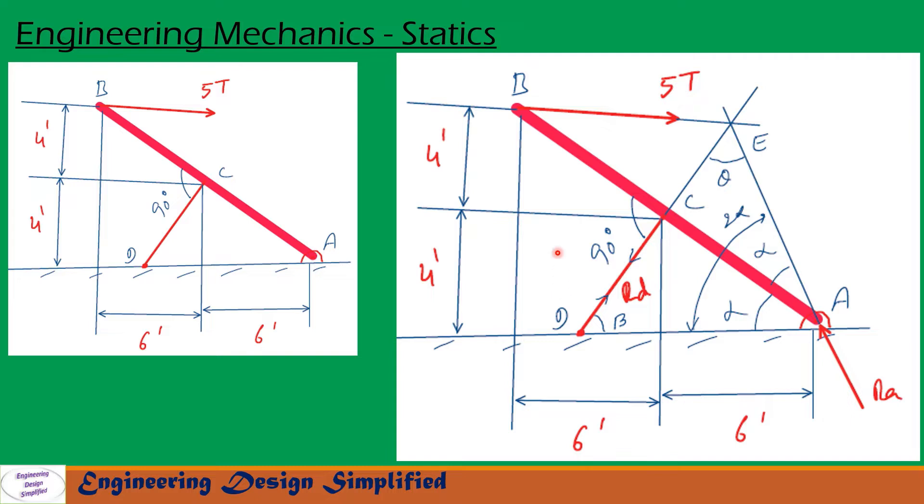First, let us see forces and reactions. The horizontal 5-ton load is drawn here and a line extended along this. Tension in this strut CD is drawn here and a line is also extended along this strut. Reaction RA is drawn here and a line is extended. All these three lines must meet at a point E for this system to be in equilibrium.